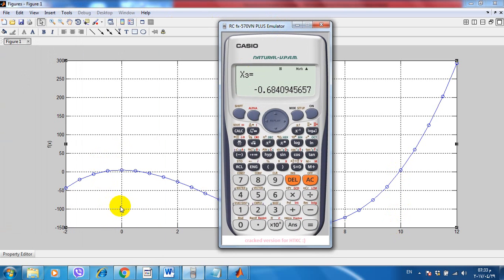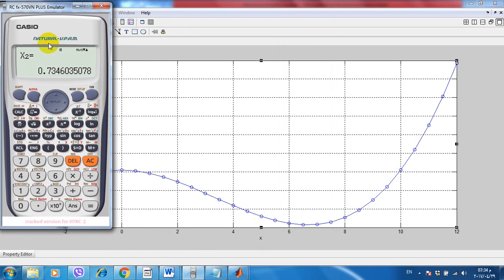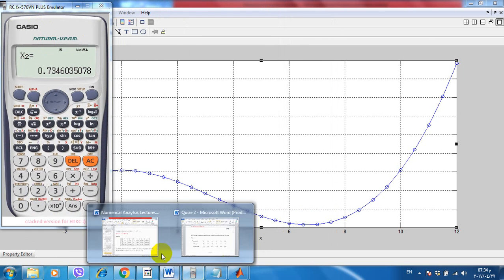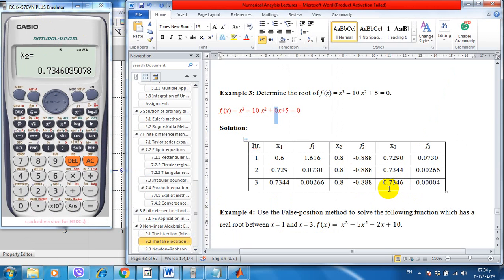So we have three values that make the function equal to zero. When we estimated by hand, we found the value of x to be 0.7346, which matches the calculator result, making the function equal to zero.